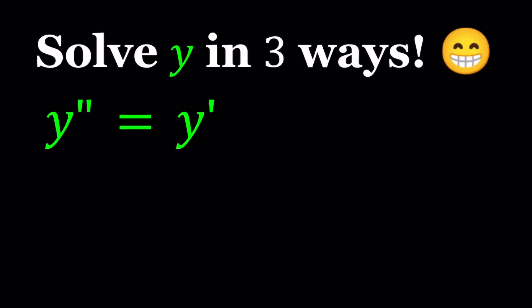Hello everyone. In this video, we're going to be solving a differential equation in three different ways. The first method is going to be a little bit painful, so bear with me while I go through all these methods. We have this very simple looking differential equation: Y double prime equals Y prime. Y double prime is the second derivative, which is the derivative of the first derivative, and we have the first derivative on the right hand side. We don't have a Y in this equation, only their derivatives.